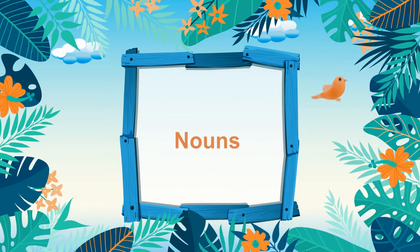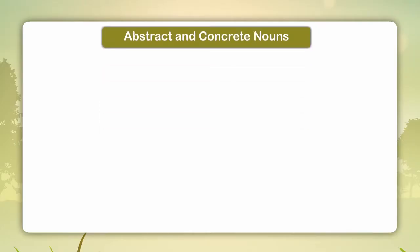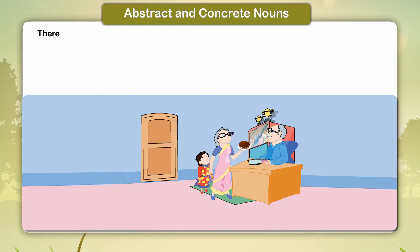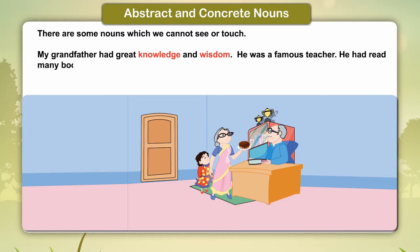Nouns: Abstract and Concrete Nouns. There are some nouns which we cannot see or touch. My grandfather had great knowledge and wisdom. He was a famous teacher. He had read many books.